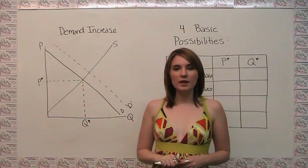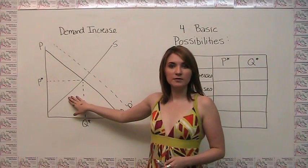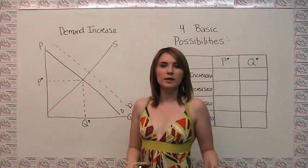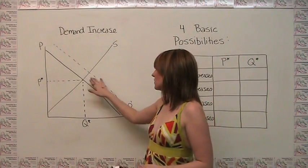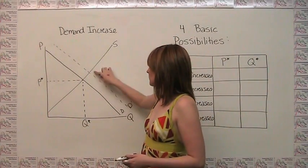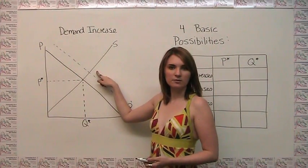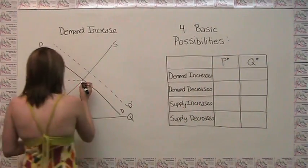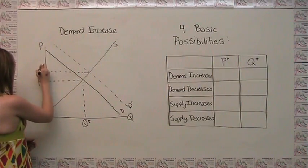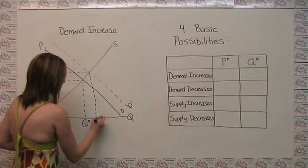Since income is a determinant of demand but not a determinant of supply, nothing happens to the supply curve here. We have our old equilibrium price and quantity where the original supply and demand curves intersected, and we have the new equilibrium price and quantity where the new supply and demand curves intersect — the old supply curve is still relevant, but now it intersects this new demand curve. We have a new equilibrium price P1 star and a new equilibrium quantity Q1 star.